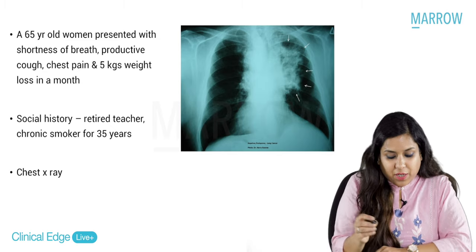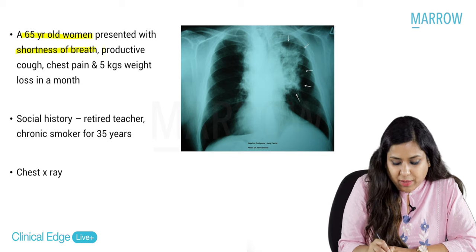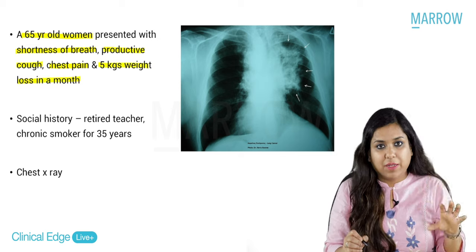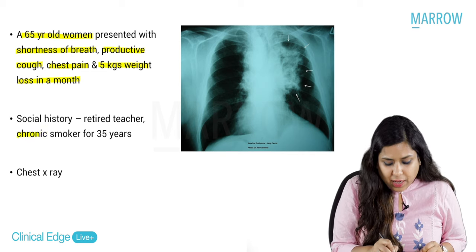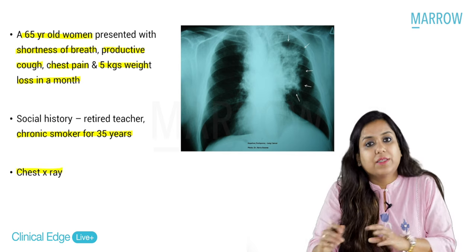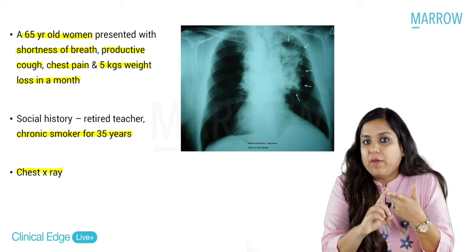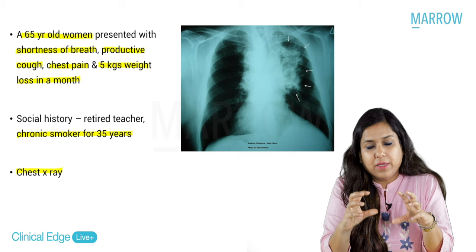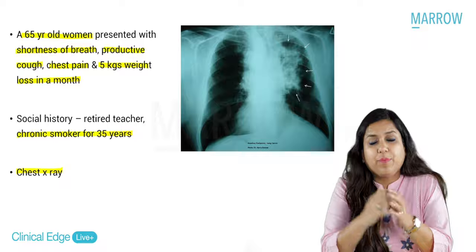First of all, there was a 65-year-old woman who presented with shortness of breath, productive cough, chest pain and a 5 kg weight loss in a month. The patient is a retired teacher and a chronic smoker for 35 years. A chest X-ray was done and the image is given. Whenever you get a long clinical question, it is important for us to mark the keywords.